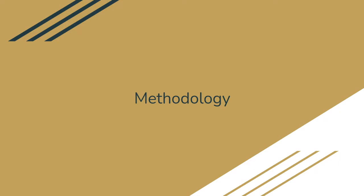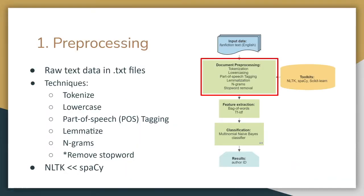This is Fang Ying. Next I'll be talking about our methodology for author identification. This is our framework for our project. The first step is document preprocessing. Our raw text data are stored in .txt files. Techniques we make use of include: tokenizing the words, lowercasing them, tagging part of speech, lemmatization — which means changing words into their root forms — n-grams, which means tokenizing several words at a time, and stopword removal, which we will discuss later. The toolkits we are using are NLTK and we are recently switching to the spaCy library.